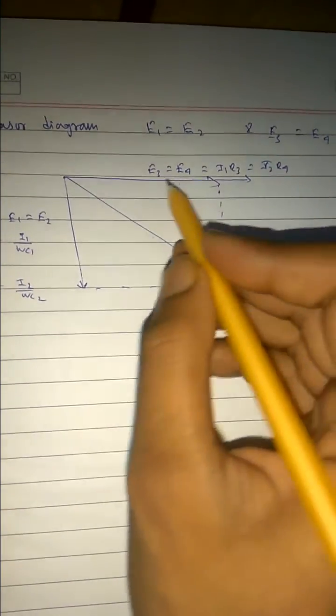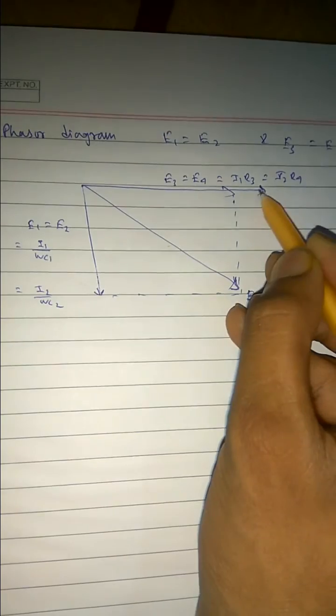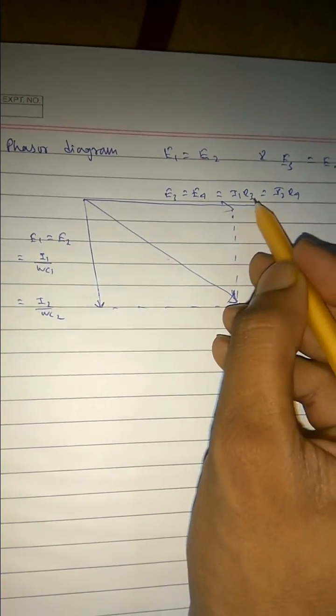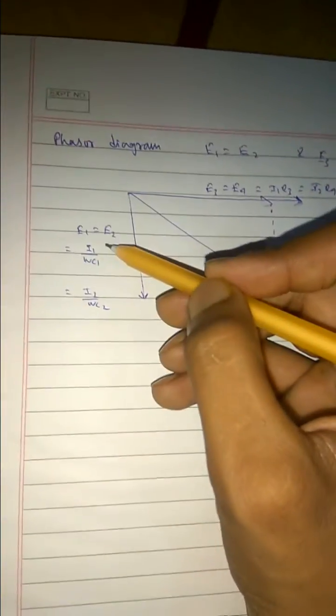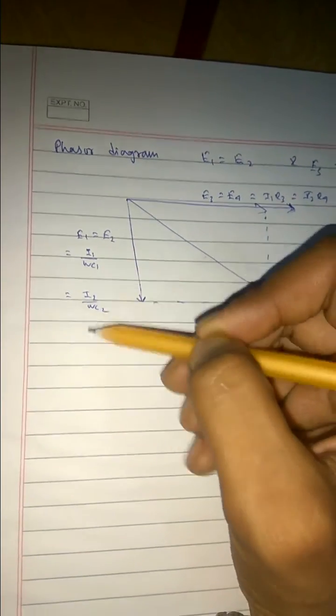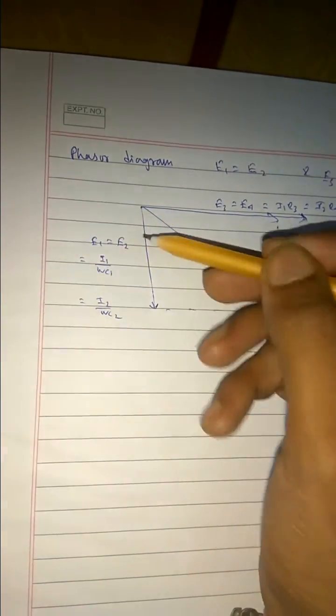So E3, E4 are same, so this is our path for the E3, E4. I1 R3, I2 R4, E1, E2 equals to this as I said in the last page.